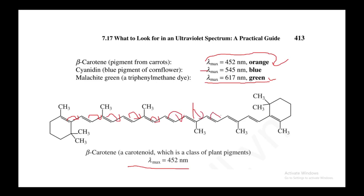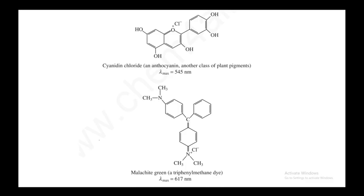Malachite green, a triphenylmethane dye, has a lambda-max of 617 nanometers and appears green. Compounds that absorb in the visible region are called visible light-absorbing compounds, and they are colored because of extended conjugation. This is the end of the UV-visible spectroscopy chapter. Next, I'll be making a video about the exercises from the Pavia book on the ultraviolet chapter — that's Chapter 7 — covering how to solve the problems. If you have any questions, please let me know. Thanks, take care, bye.